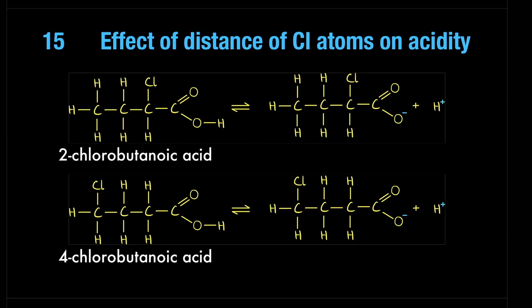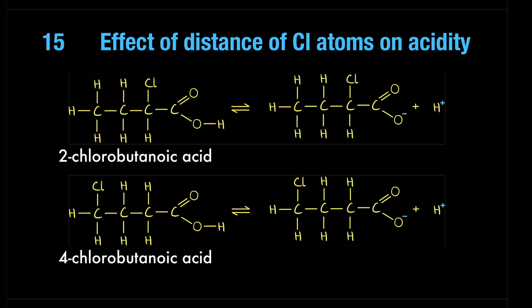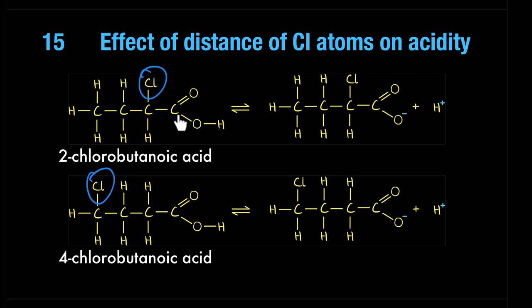The position of the Cl atom also matters. Two isomers may have the same number of carbon atoms and the same substituents, but one chlorine is closer to the acid group and one is further away. The one closer to the acid group exerts a greater pull of electrons from the acid group, making a more stable anion. Therefore 2-chloro propanoic acid is a stronger acid than 4-chloro propanoic acid.